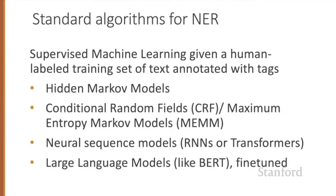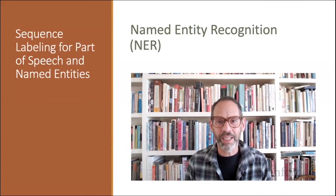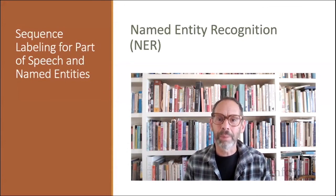Like part of speech tagging, named entity recognition is done by supervised machine learning, where we have a human-labeled training set in which text is marked up with named entity tags. We can use classic ML algorithms like HMMs or CRFs, or neural models like sequence models or large language models that are fine-tuned. We've now introduced the idea of named entity tagging, an important first step in many NLP tasks.